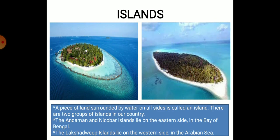Islands: It is a very beautiful landform on the earth. A piece of land surrounded by water on all sides is called an island. There are two groups of islands in our country. First, the Andaman and Nicobar Islands lie on the eastern side in the Bay of Bengal — that is shown in the first picture. Second, the Lakshadweep Islands lie on the western side in the Arabian Sea, which is shown in the next picture.